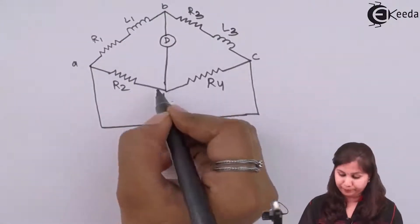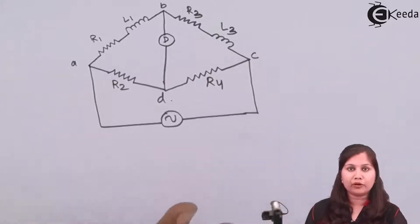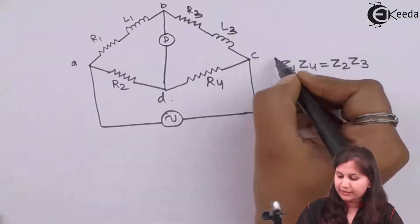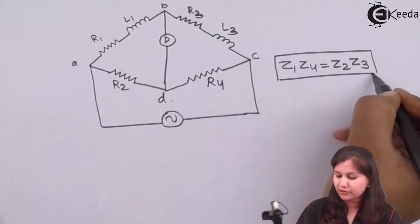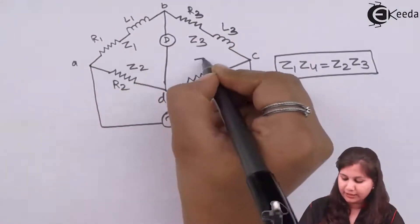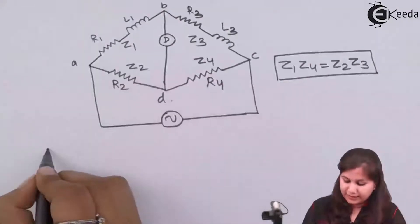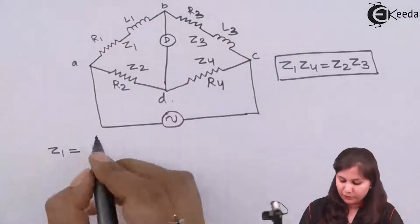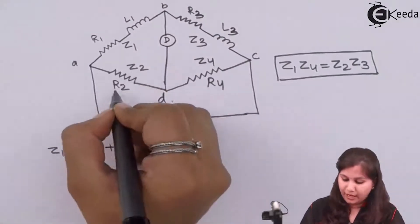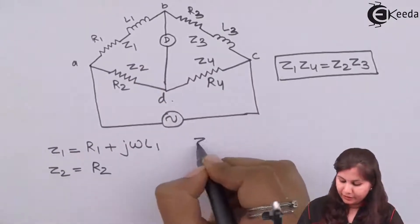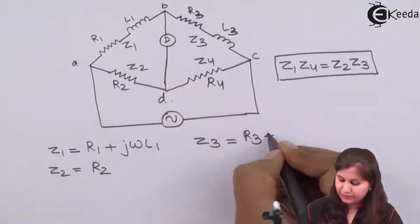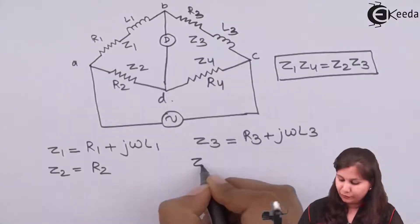We have to find out R2. Now the general balance equation for an alternating current bridge is Z1·Z4 = Z2·Z3 — that is, the product of the impedances in the opposite pairs of arms are equal. This is Z1, this is Z3, Z2 and this is Z4. So Z1 is the series combination of R1 and L1, so it will be R1 + jωL1. Z2 is the R2 resistance. Z3 is the series combination of R3 and L3, so it is R3 + jωL3, and Z4 is R4.